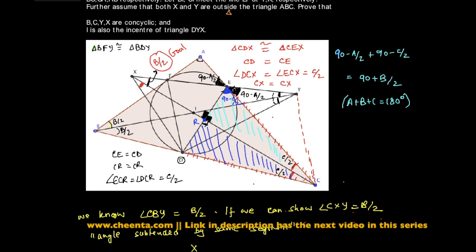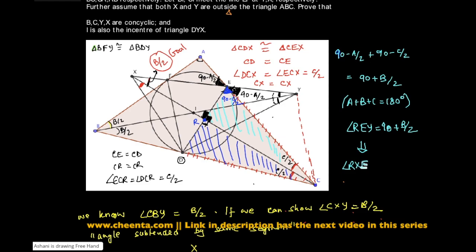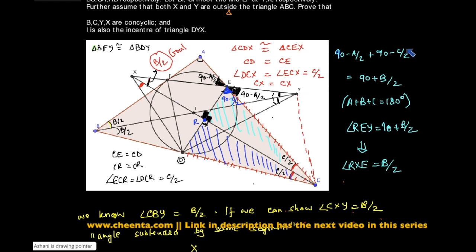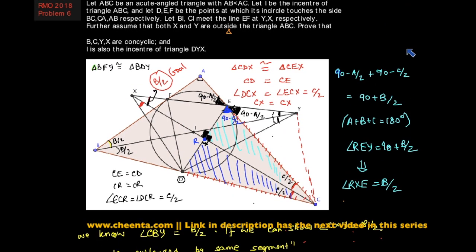So angle RXY — or the full angle at X — is 90 plus B/2. Since the right-angle part contributes 90, the remaining angle CXY must be B/2. We already know angle CBY is B/2, so by the angles in the same segment property, the four points C, B, X, Y are concyclic. A bit of angle chasing and careful observation solves this problem. It's a simple but technically detailed type of problem.